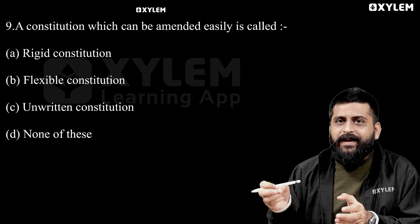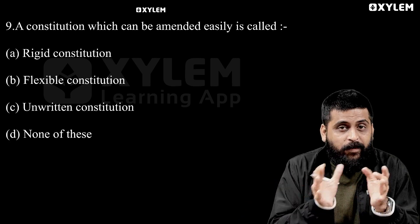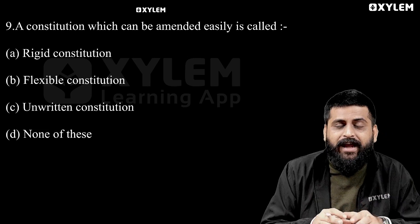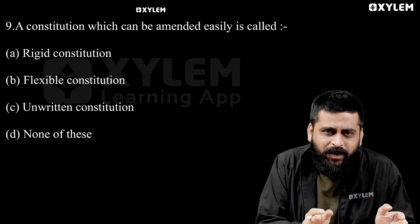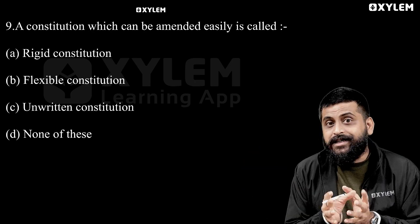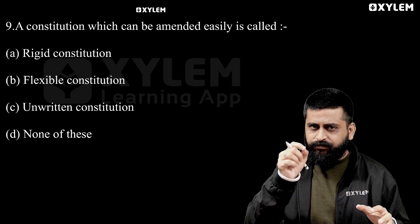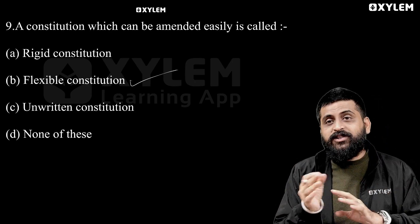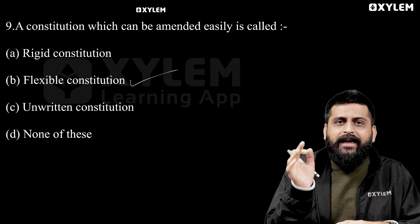This is political science related. A constitution which can be amended easily is called what? Amendment means change. If a constitution is rigid, it can't be amended easily. The right answer is a flexible constitution — because it is flexible, it can be changed.